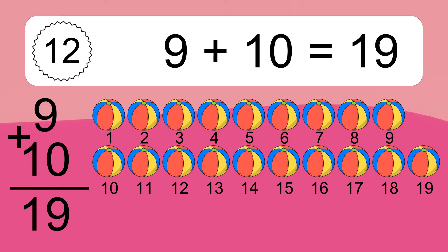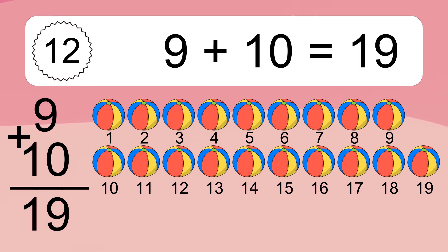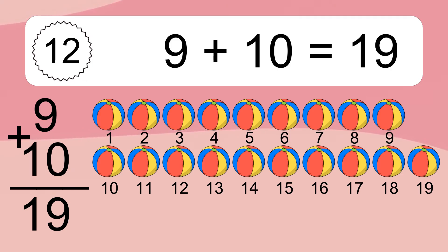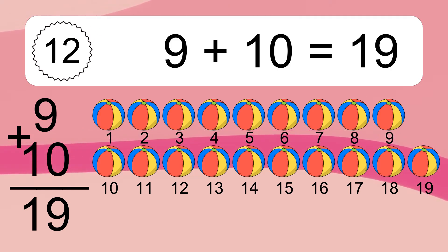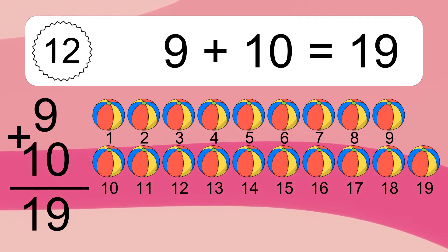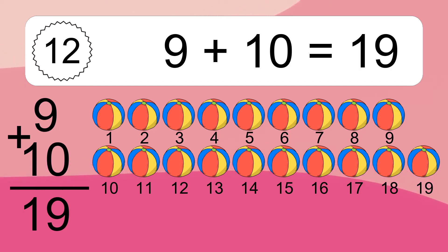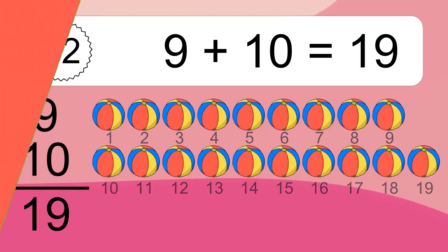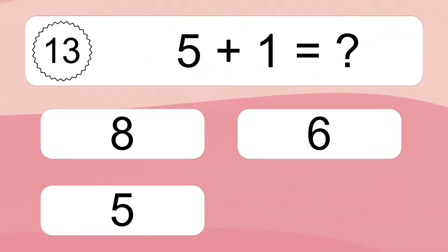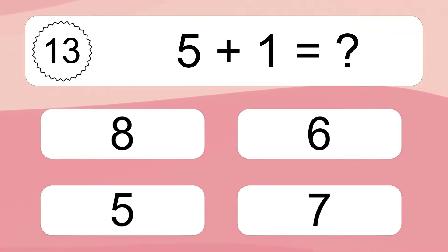Let's count it. 1, 2, 3, 4, 5, 6, 7, 8, 9, 10, 11, 12, 13, 14, 15, 16, 17, 18, 19. 5 plus 1 equals what?